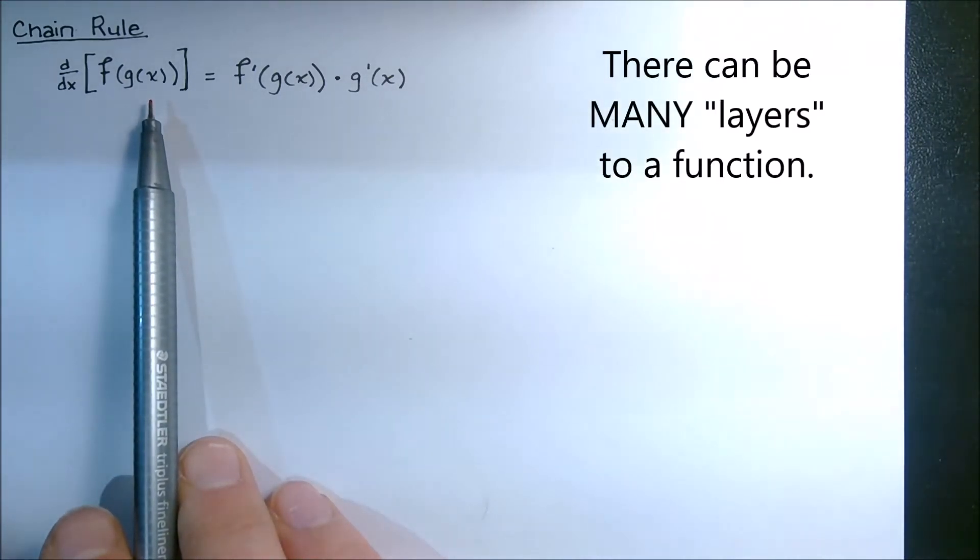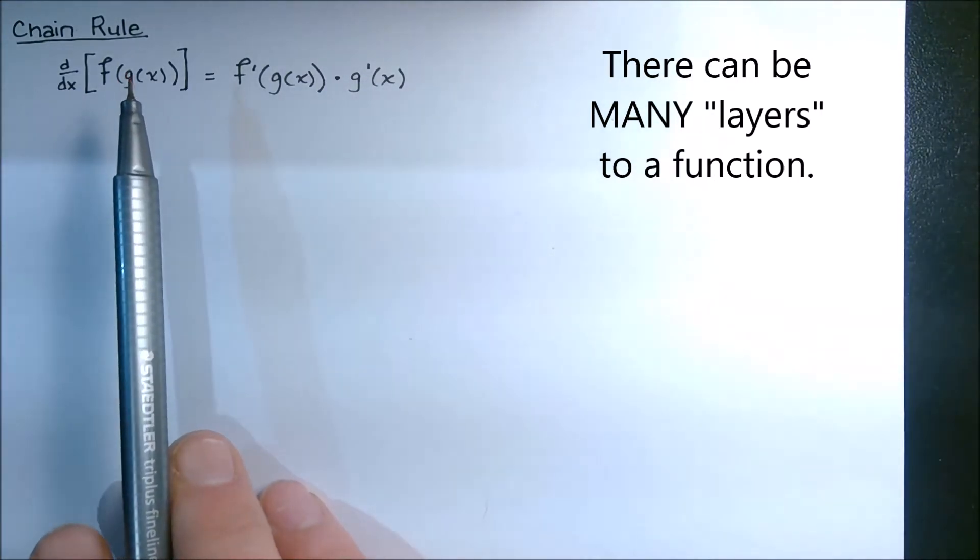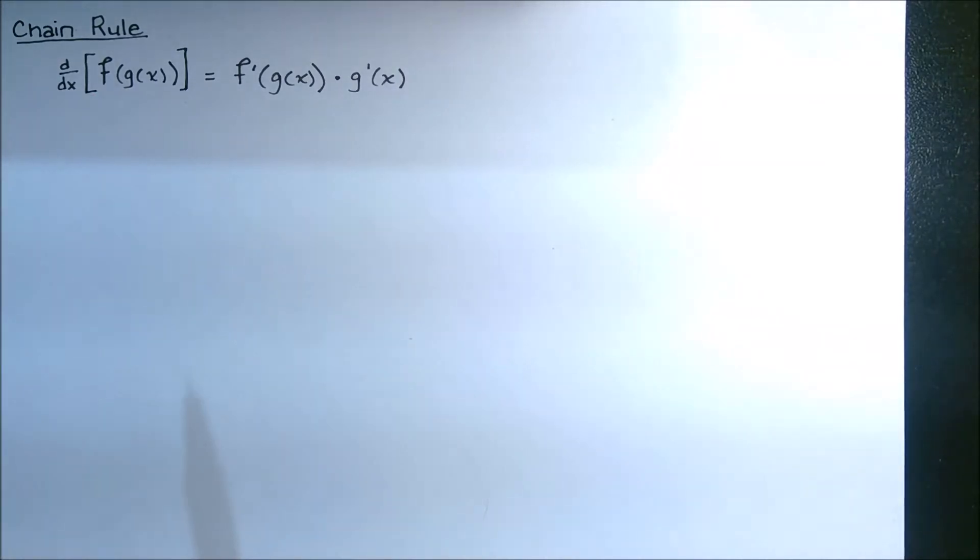Truth is, chain rule can be done for any number of links in the chain. Sometimes it's f of g of h of i of j of k of x. So sometimes there's functions within functions within functions, which sounds all kinds of abstract and extra. When we look at an example, hopefully it'll make a little bit more sense what that means.